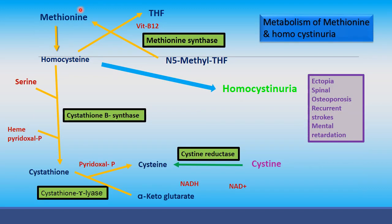Methionine is converted to cysteine. This cysteine, in the presence of serine and heme pyridoxal phosphate, is converted into cystathionine. Cystathionine is then, in the presence of pyridoxal phosphate, converted into cysteine and alpha-ketoglutarate. Cysteine is also formed by cystine in the presence of cystine reductase enzyme.